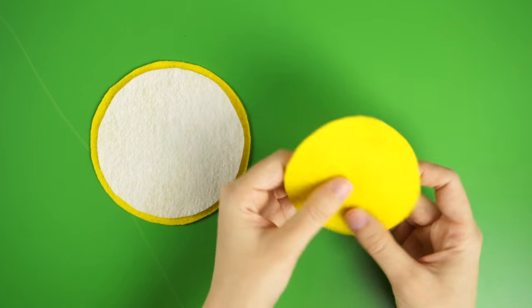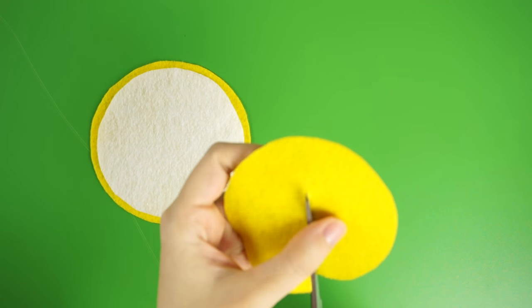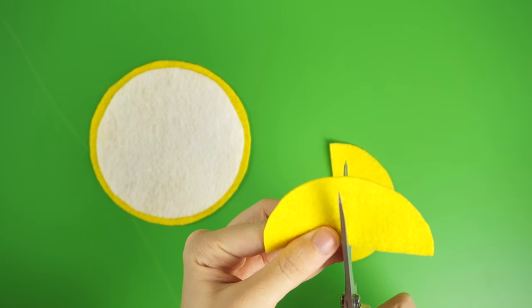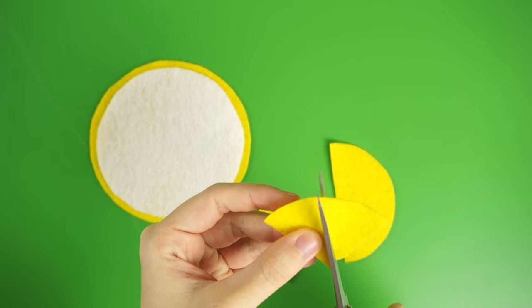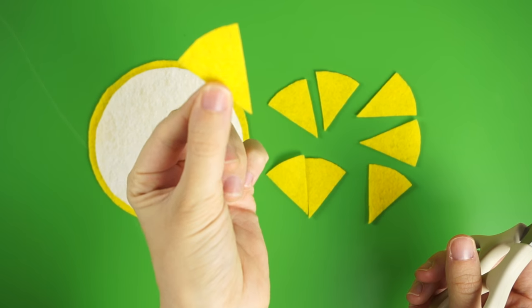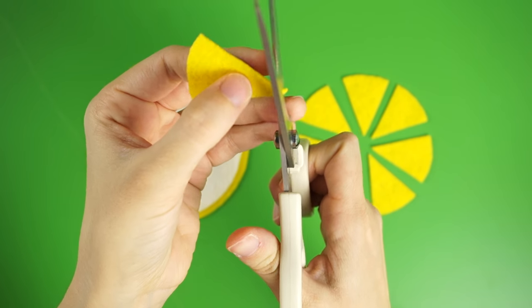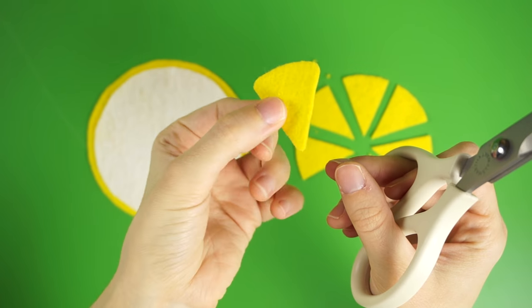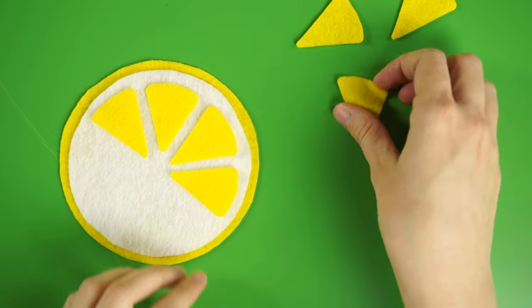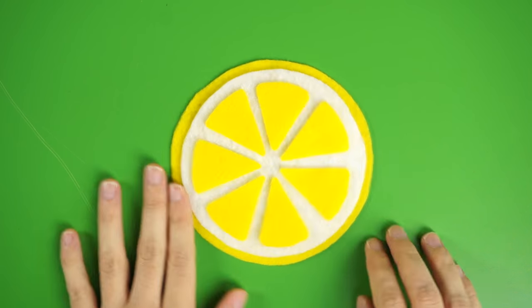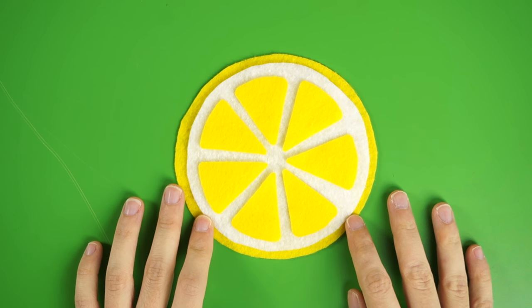To make the slices, cut the smallest circle down the center again and again like a pizza until you have 8 identical triangles. Get rid of one of the slices, then round the corners of each piece with your scissors. Arrange them like this with an equal amount of white space around each piece, and this is what your applique will end up looking like.